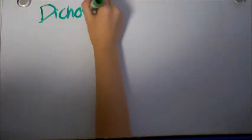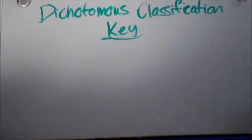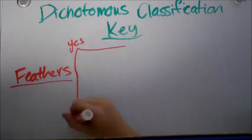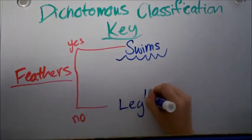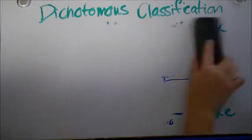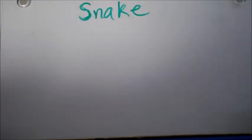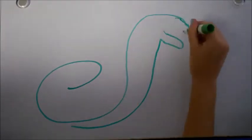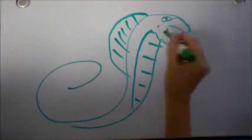The dichotomous classification key makes things much more easier if you want to find the species name by using its characteristics. And what we're going to do here is take a look at the snake and follow it down. Here's my picture of a king cobra. Really good, yeah.